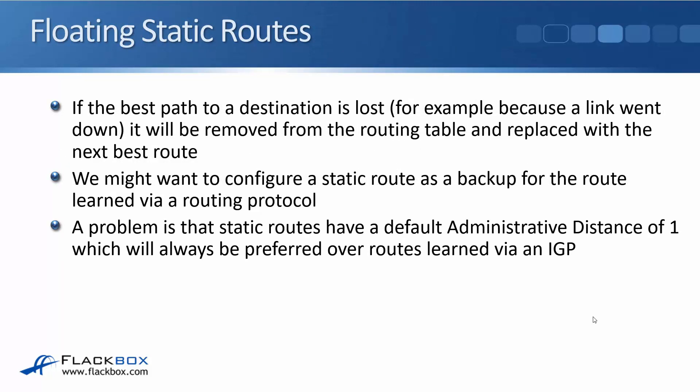Another thing we can do is floating static routes. If the best path to a destination is lost — for example because a link went down — it will be removed from the routing table and replaced with the next best route. We might want to configure a static route as a backup for a route learned via a routing protocol. The problem is that static routes have a default administrative distance of 1, so they're always preferred over routes learned via an IGP. So if we're running an IGP and want to add a static route as a backup, it won't work by default because it will be preferred over the IGP rather than being the second choice.